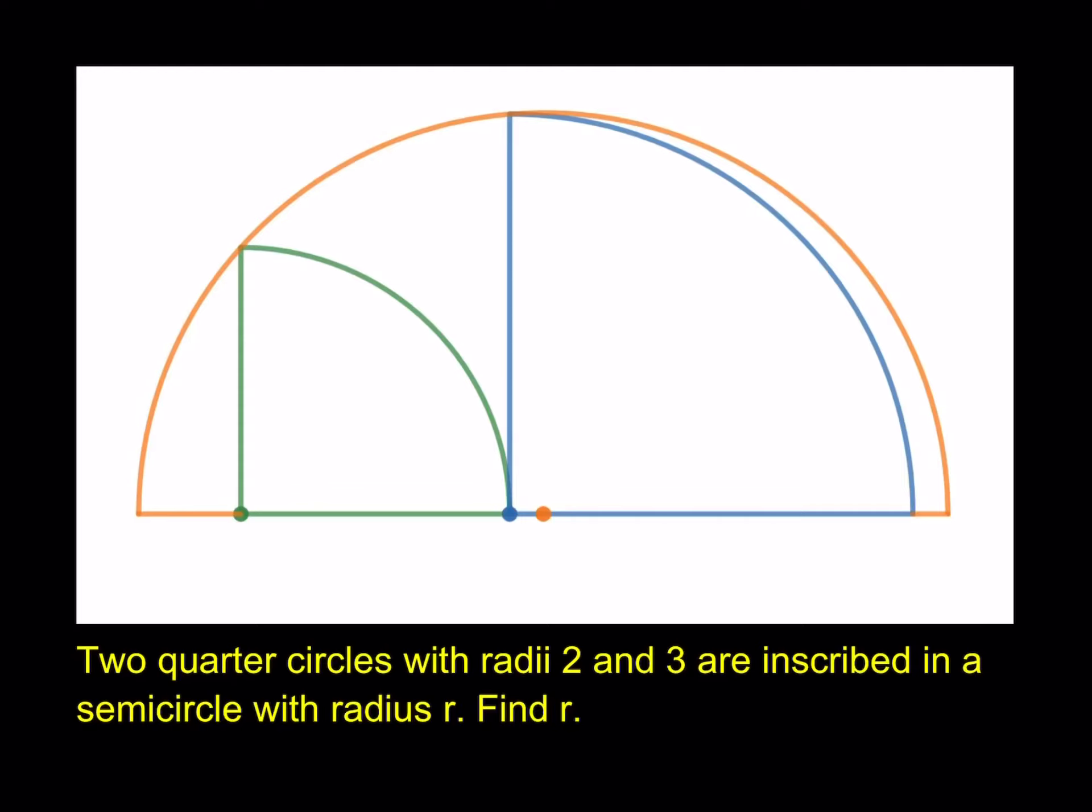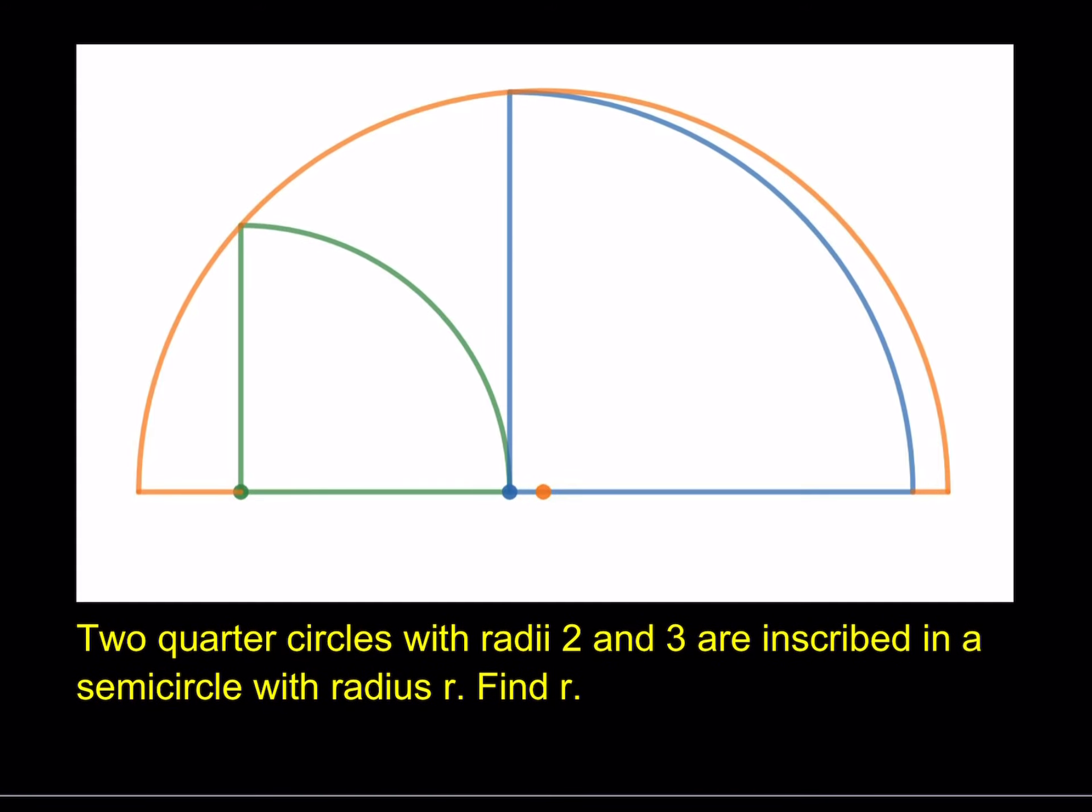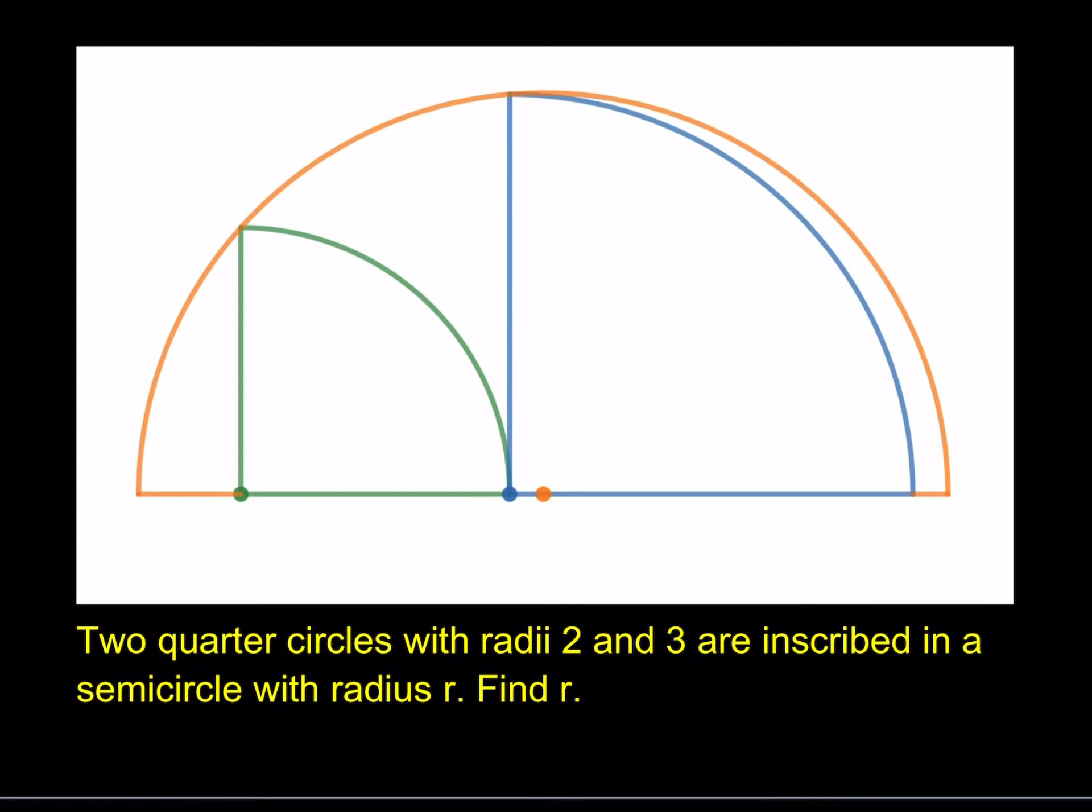Hello everyone. In this video we're going to be solving a geometry puzzle. Two quarter circles with radii 2 and 3 are inscribed in a semicircle with radius r. Find the radius.